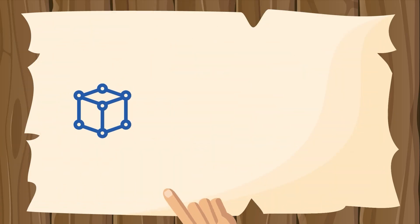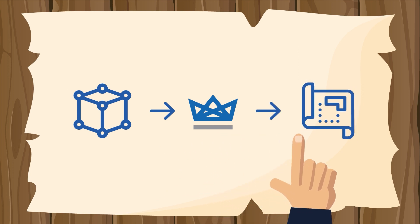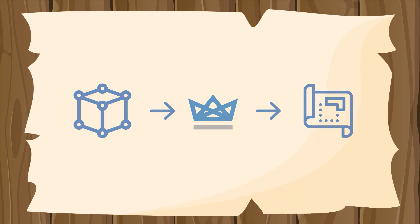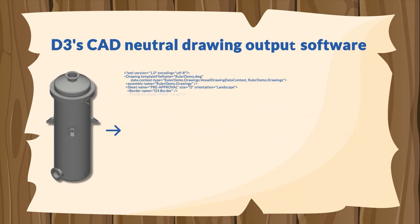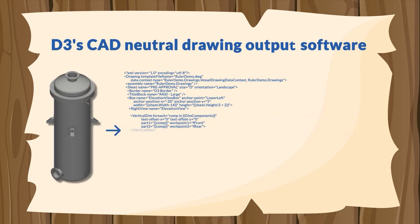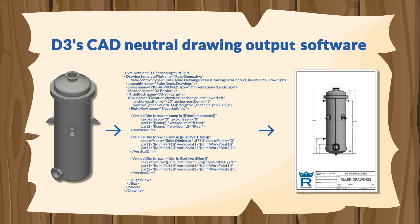Using RulerDraw is as simple as sending models and receiving drawings. For example, take a look at this 3D tank configurator model that RulerDraw illustrated and annotated with just 34 lines of code.